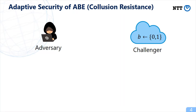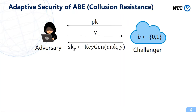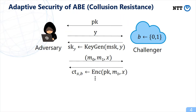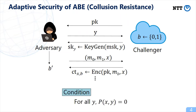Concretely, we consider the following game in which the adversary is given a public key and can make secret key queries for its choice of y. It can also make a challenge ciphertext query in which it sends M0 and M1 and the challenge attribute x, and it is given a ciphertext for a bit B chosen by the challenger. Finally, the adversary outputs B', and if the probability that B' equals B is negligible, then the scheme is said to be adaptively secure. Of course, the adversary cannot ask for the secret key which can decrypt the challenge ciphertext.